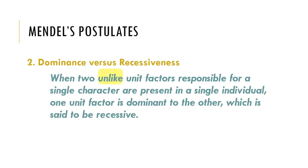Mendel's second postulate on the dominance of a trait over a recessive one states that when two unlike unit factors responsible for a single character are present in a single individual, one unit factor is dominant to the other, which is said to be recessive. It means that in a heterozygous individual which has both dominant and recessive alleles for a certain character, the dominant trait is always expressed as phenotype. However, we cannot expect the same trend in other inheritance patterns labeled as non-Mendelian inheritance, such as incomplete dominance or codominance.